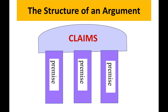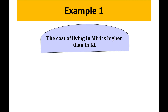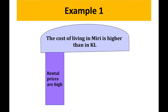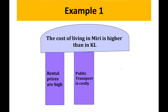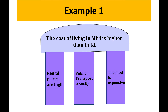Typically, you would try to provide as much evidence as you can to make sure your argument is very strong. Here's one example: 'The cost of living in Miri is higher than KL.' My first reason is rental prices are high, perhaps because we are at the border of Brunei. Second, public transport is costly — bus services are not very regular, so most people resort to taking Grab. Third, the food is expensive. Based on these three premises, I'm building an argument and you can see how this supports my main claim.